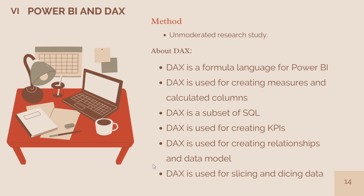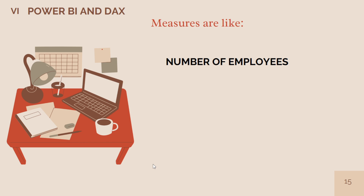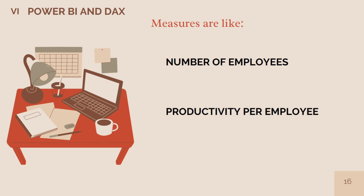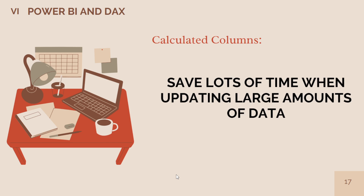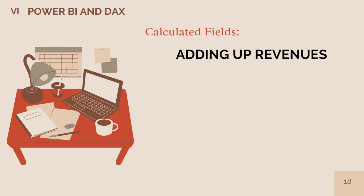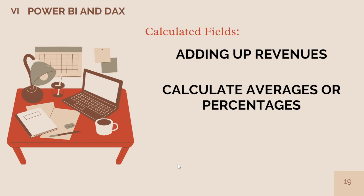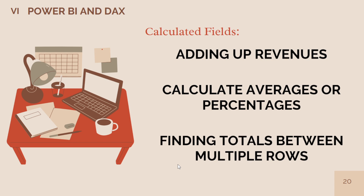DAX is a formula language for Power BI, similar to SQL. It is used to create measures, calculated columns, calculated fields, KPIs, and tables. Measures are like measures in Excel but can also handle text or boolean values. Calculated columns show data from other columns using DAX formulas, meaning if one measure changes, any calculated column based on it updates automatically. Calculated fields are used to add up numbers across rows, calculate averages or percentages, and find totals — for example, total revenue per product category over total revenue per product type.